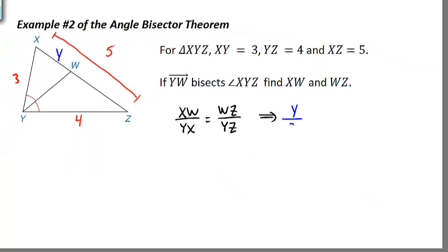Okay, YX we do know—that's 3. WZ again we don't know it, but if we look back over to our diagram, we should be able to write an expression for it. If the whole length from X to Z is 5 and X to W is Y, this should be 5 minus Y.